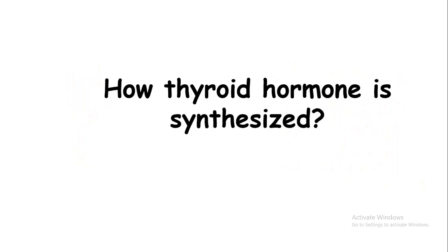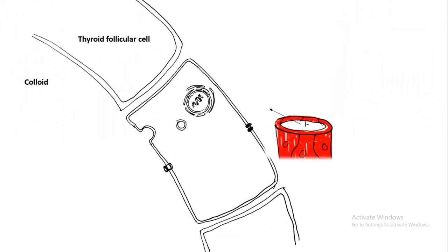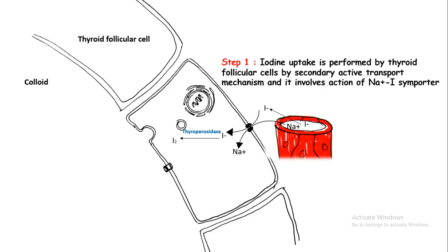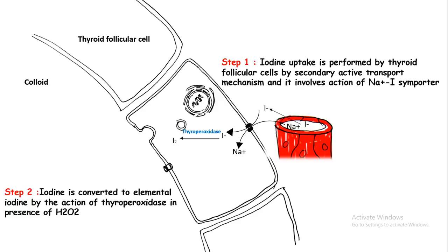Thyroid hormone synthesis requires iodine, which is supplied from the blood. Iodine enters the thyroid follicular cell by secondary active transport, moving into the cell along with sodium. Inside the follicular cell, iodine is converted into an elementary form of iodine by the enzyme thyroperoxidase.